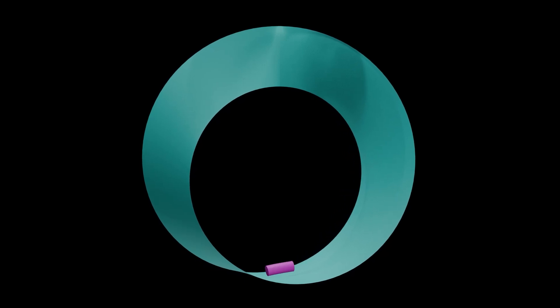Why did the chicken cross the Mobius strip? To get to the same side.